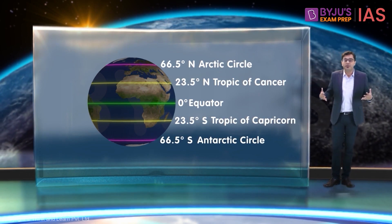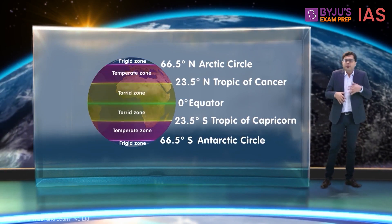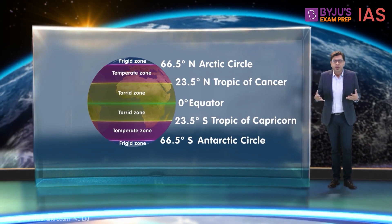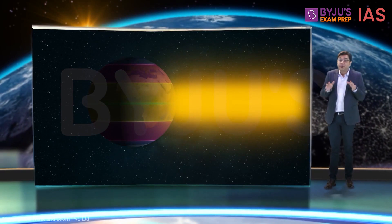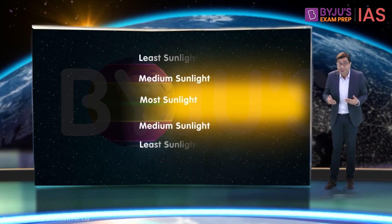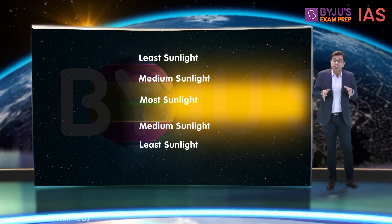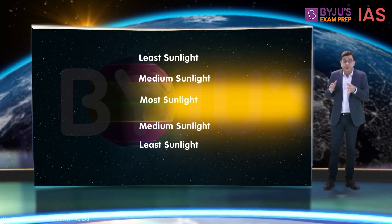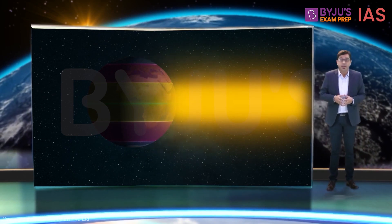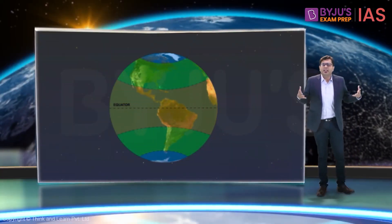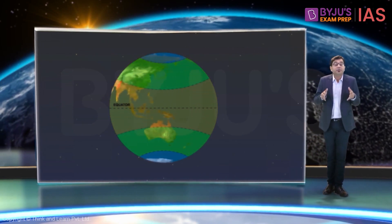With the help of these latitudes, we can demarcate the heat zones of the Earth. Due to the spherical shape of the Earth, different parts receive different amounts of sunlight. Generally, the amount of sunlight received decreases as we move from the equator towards the poles. Based on the difference in the amount of heat received, the temperature decreases as one moves away from the equator. Depending upon the difference in temperature observed, the Earth is divided into different types of heat zones.